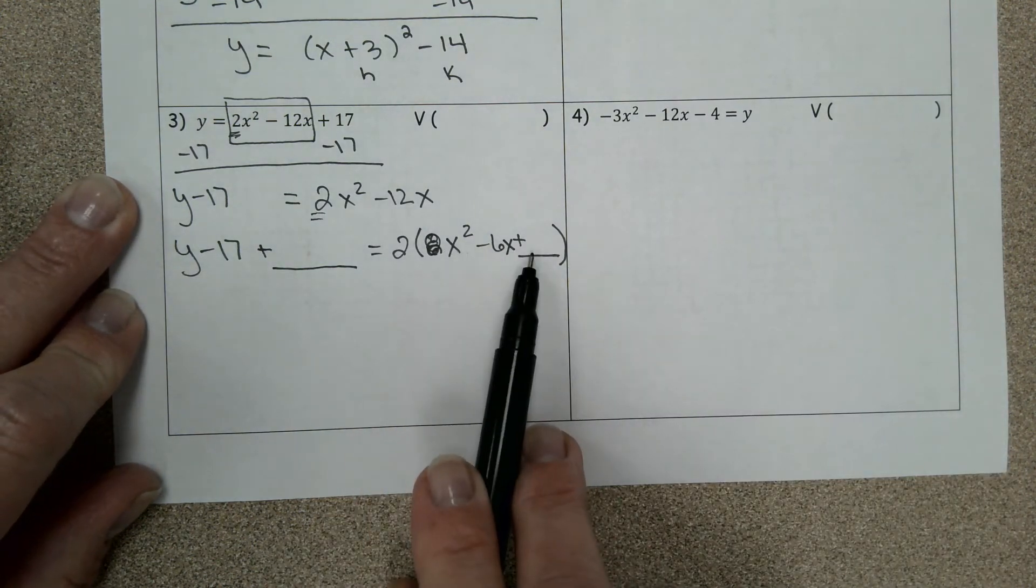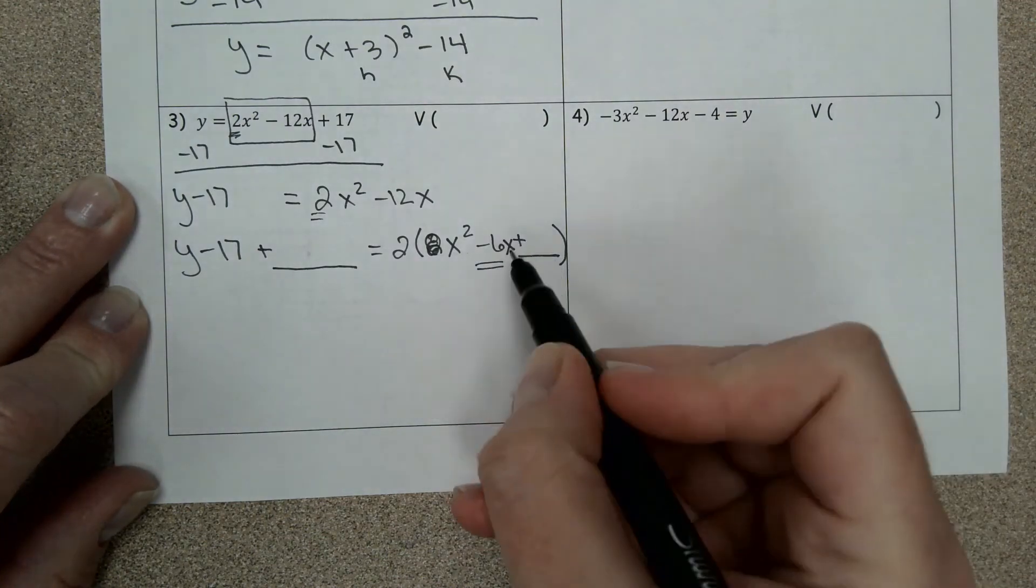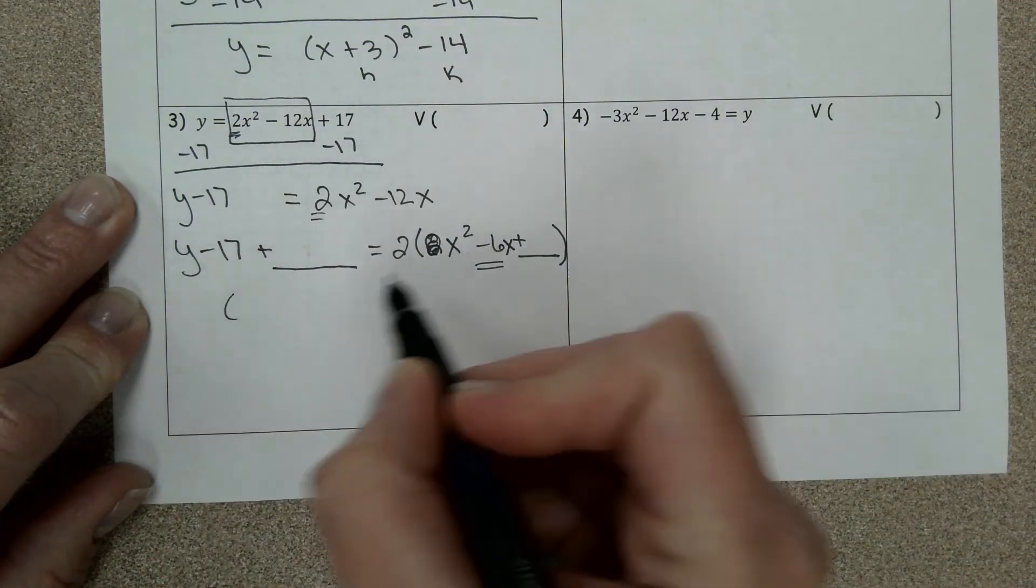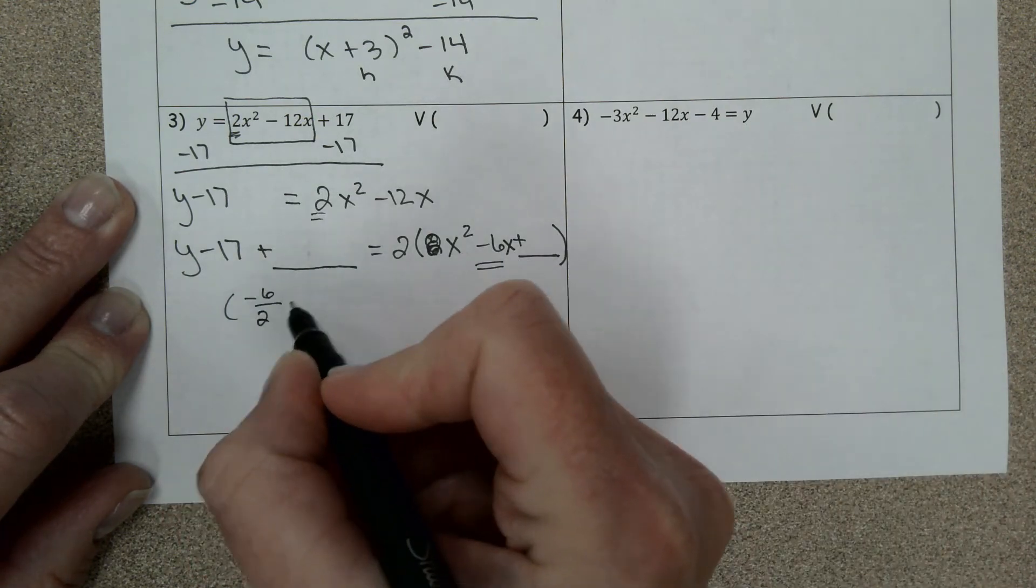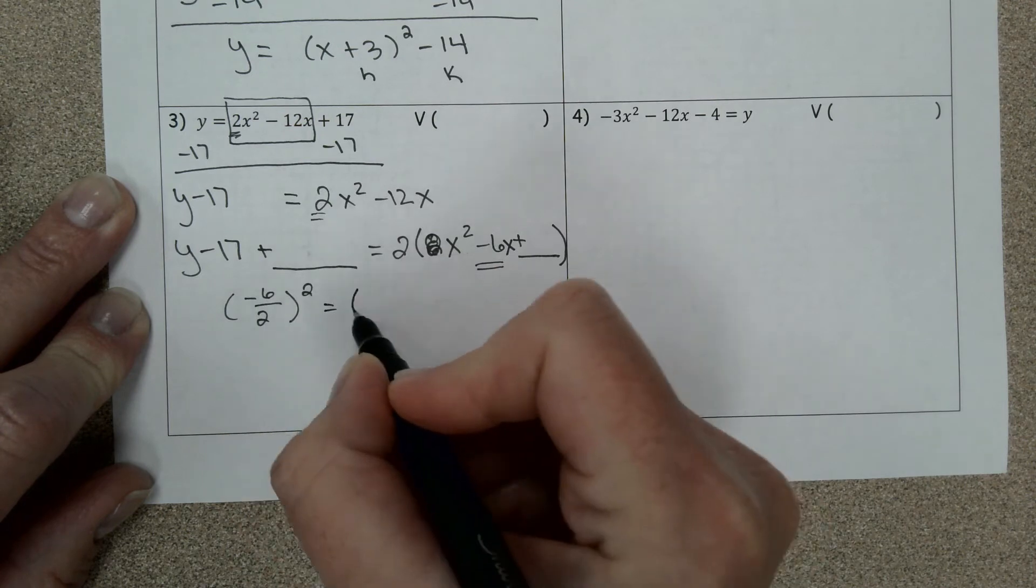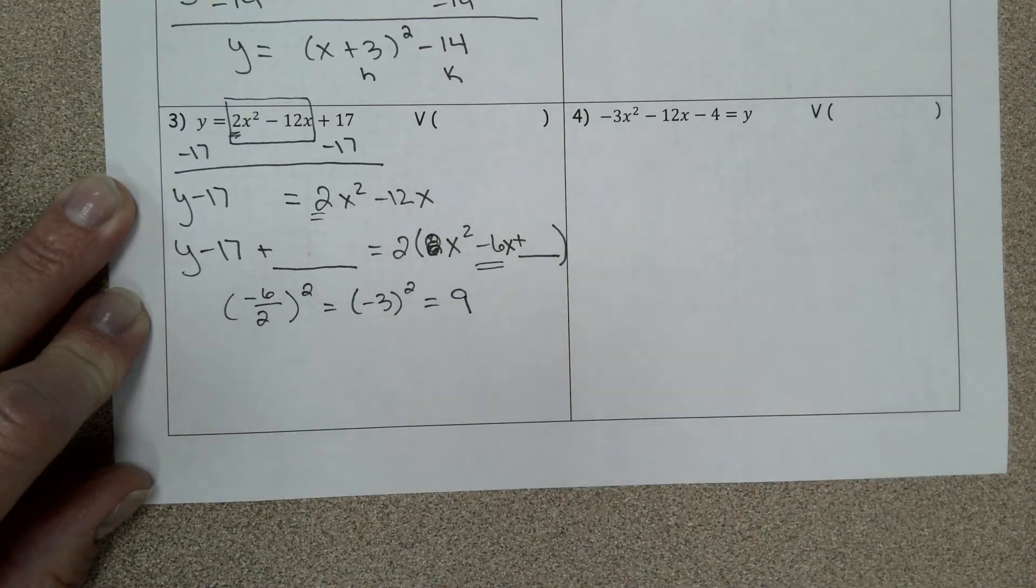And then I need a little blank here. So now the part that's in the parentheses, this is the part where now I'm going to complete the square. So it said take your middle term, make sure you take your sign with it, so it's negative 6 divided by 2 squared. Negative 3 squared equals 9.